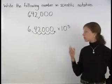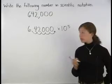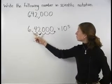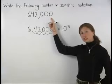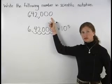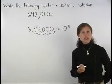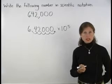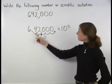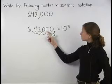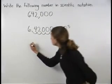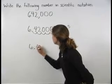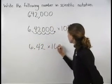Notice that the exponent is positive. This is because we would need to move the decimal point to the right in order to get back to the original number, 642,000. So 642,000 can be written in scientific notation as 6.42000 times 10 to the 5th power or just 6.42 times 10 to the 5th power.